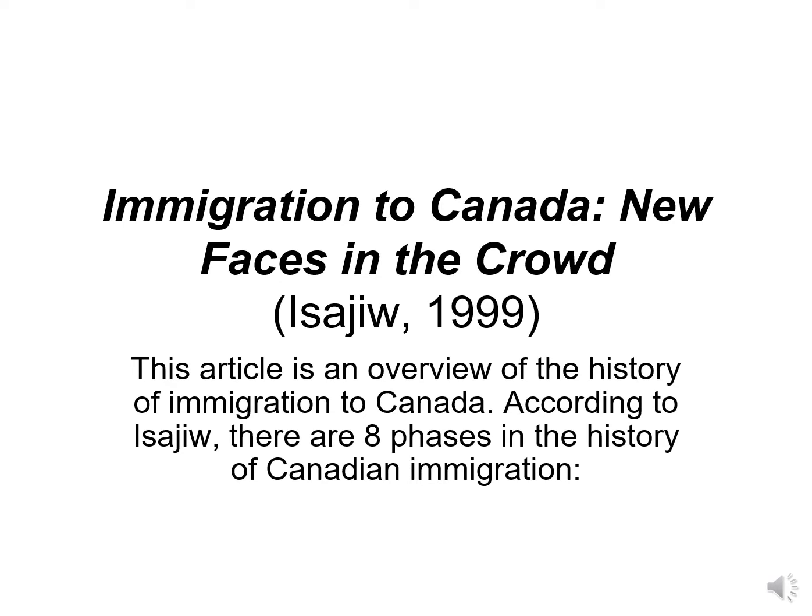This narrated PowerPoint walks you through the chapter 'Immigration to Canada: New Faces in the Crowd' from Vsevolod Isidou's 'Understanding Diversity, Ethnicity, and Race in the Canadian Context,' published by Thomson Educational Publishing in 1999. The chapter is an overview of the history of immigration to Canada. Mr. Isidou has broken the history of immigration to Canada down into eight phases in order to examine them.